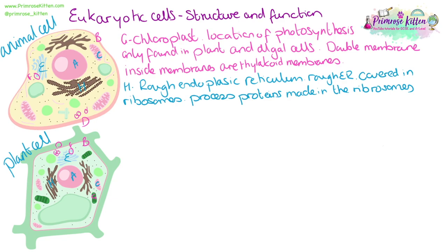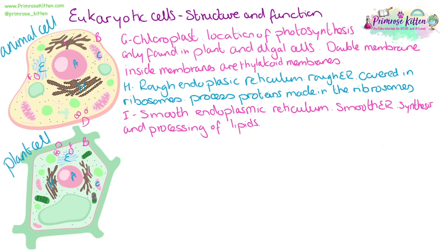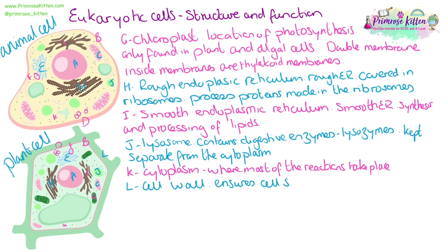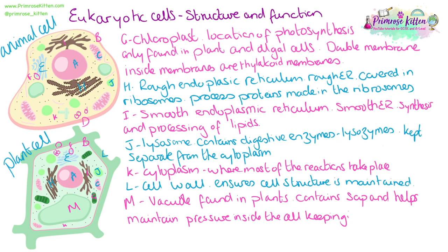The rough ER processes proteins that are made within the ribosomes. The smooth endoplasmic reticulum, also found in both animal and plant cells, is a site of synthesis and processing of lipids. Lysosomes contain digestive enzymes — being in a lysosome keeps them separate from the cytoplasm, where most cell reactions take place. Plant cells will also have a cell wall to maintain cell structure, and a vacuole containing sap that helps maintain cell shape by keeping cells rigid.